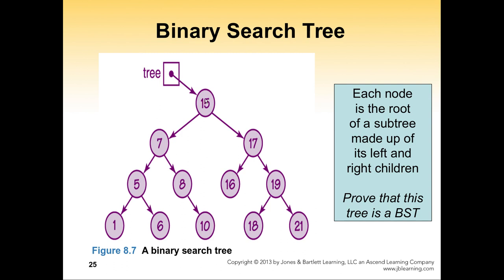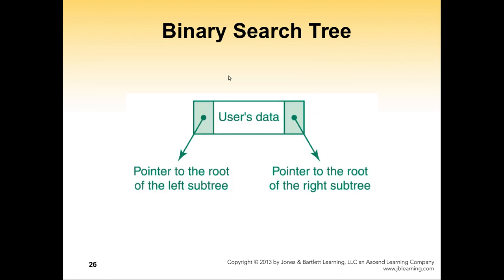Looking at this binary search tree: 15 is the root, all left children are less than 15, all right children are greater. Taking node 19: its left child is 18 (less) and its right child is 21 (greater). That's the characteristic of the binary search tree — the property holds for every node in the tree.